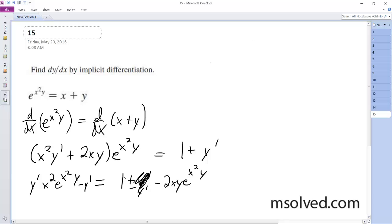So what I end up getting is y' times the quantity (x² e^(x²y) minus 1) is equal to 1 minus 2xy e^(x²y).